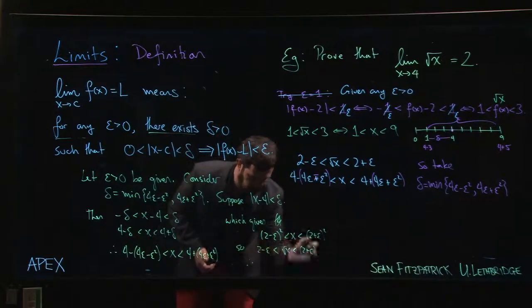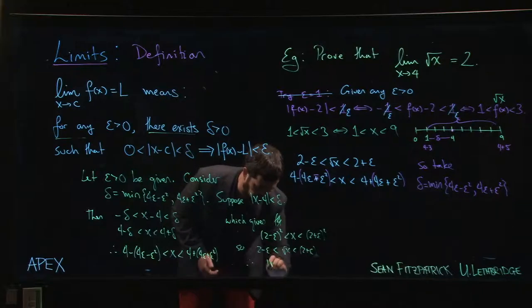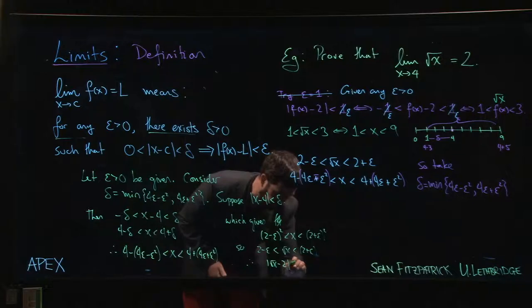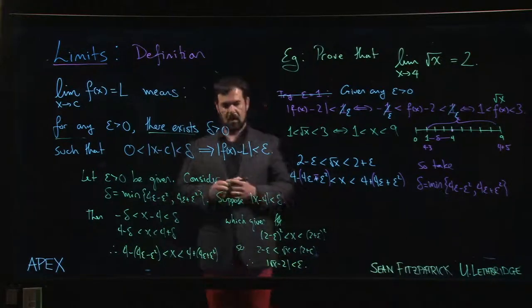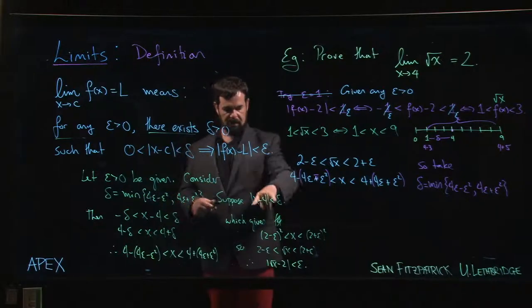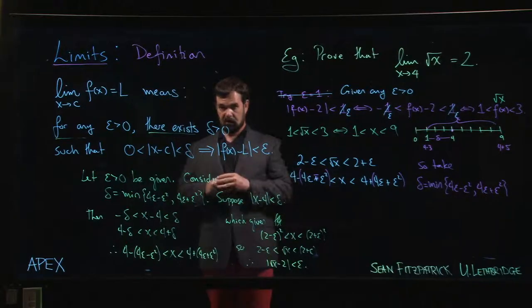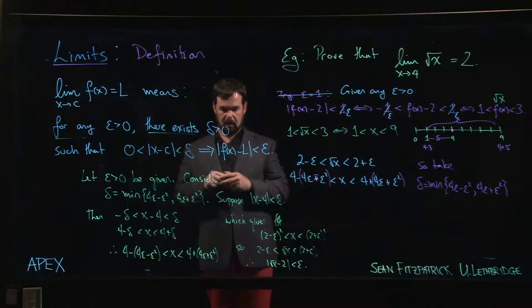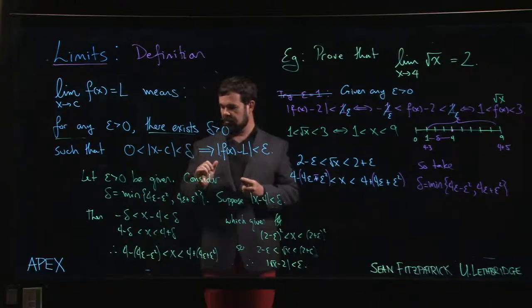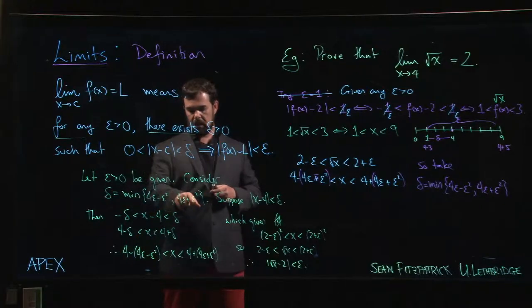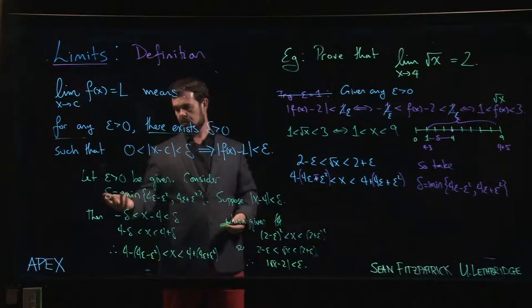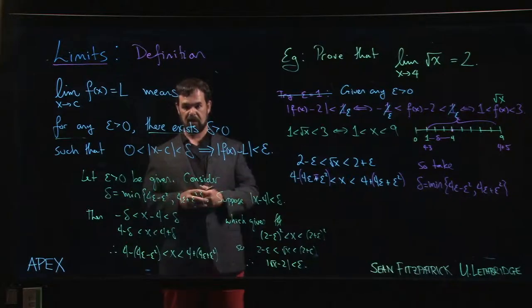And adding 2 to both sides, we get what we want, right? That we get root x minus 2 is between minus epsilon and epsilon. So the absolute value is less than epsilon. And that's what we needed to show, right? We needed to show that if x minus 4 is less than delta in absolute value, then root x minus 2 is less than epsilon in absolute value. The key thing here is that we were able to choose this delta, and delta depends only on epsilon. So it doesn't matter what epsilon is given, we can come up with the corresponding delta, and we can make things work.